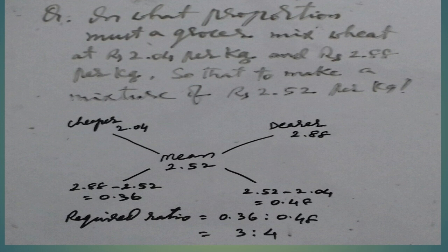Rs. 2.88 minus Rs. 2.52 equals 0.36. Rs. 2.52 minus Rs. 2.045 equals 0.48. Required ratio: 0.36 to 0.48 equals 3 to 4. Thank you.